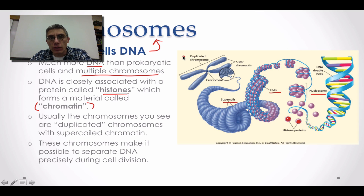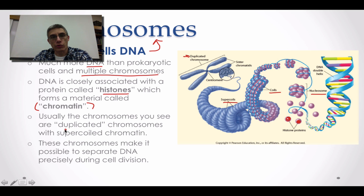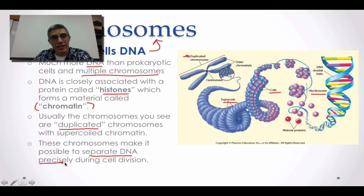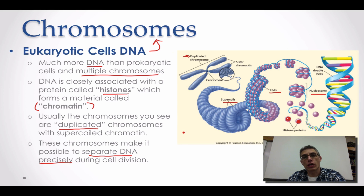What you see up here is a duplicated chromosome, meaning this cell is actually in the process of dividing. Usually the chromosomes you see are duplicated chromosomes with supercoiled chromatin. We'll do a lab in class that gives you an opportunity to see these duplicated chromosomes. These chromosomes make it possible to separate the DNA precisely during cell division, ensuring each daughter cell gets its representative amount of DNA.